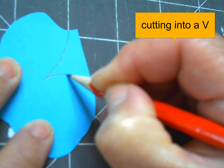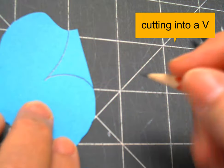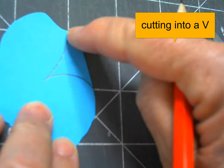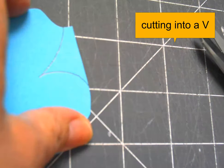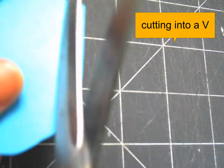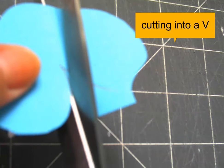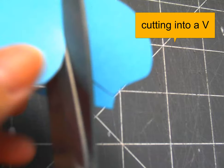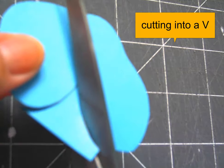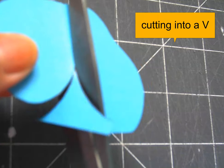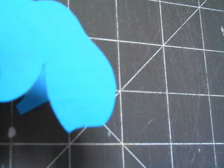If I'm cutting a V shape into a piece of paper, rather than cut in and turn my scissors in that corner and create a tear, I'm going to cut in first from one side, take my scissors out, and cut in from the other side so that I get a nice clean cut where those two points meet.